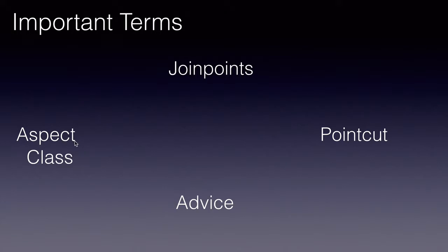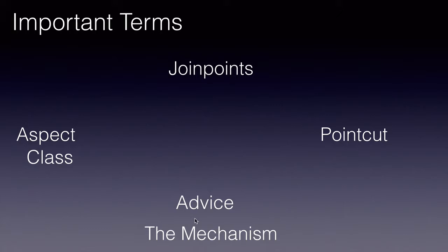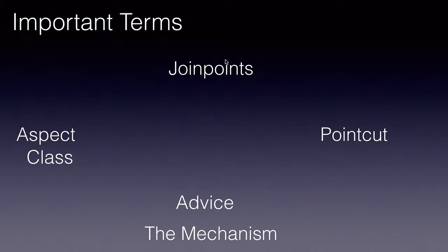An aspect is made up of a number of advices. An advice is a method that addresses a part of the concern. A join point is a point in the Java program where this advice needs to be applied. This could be a method, a field, or a constructor.